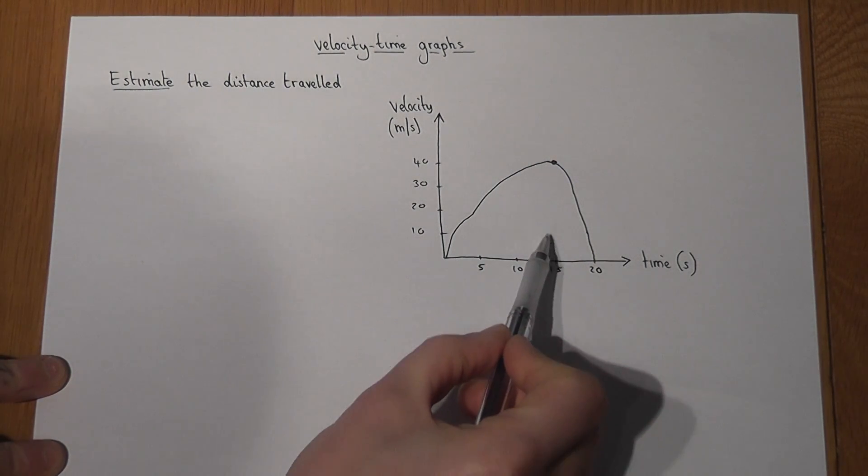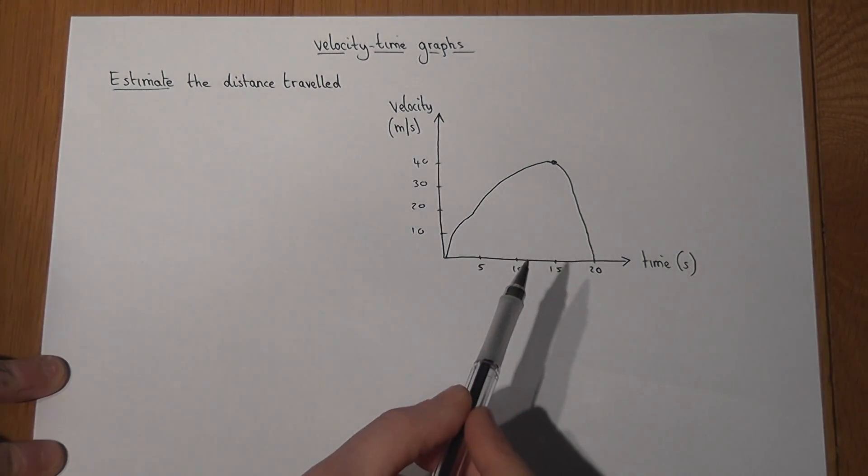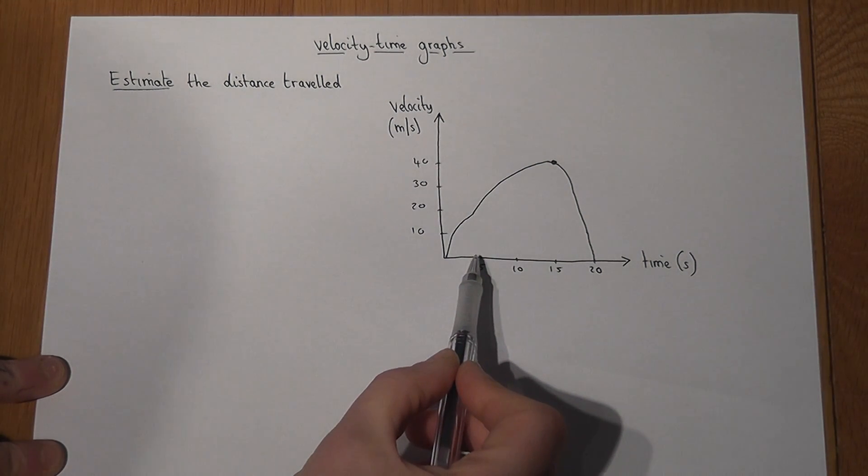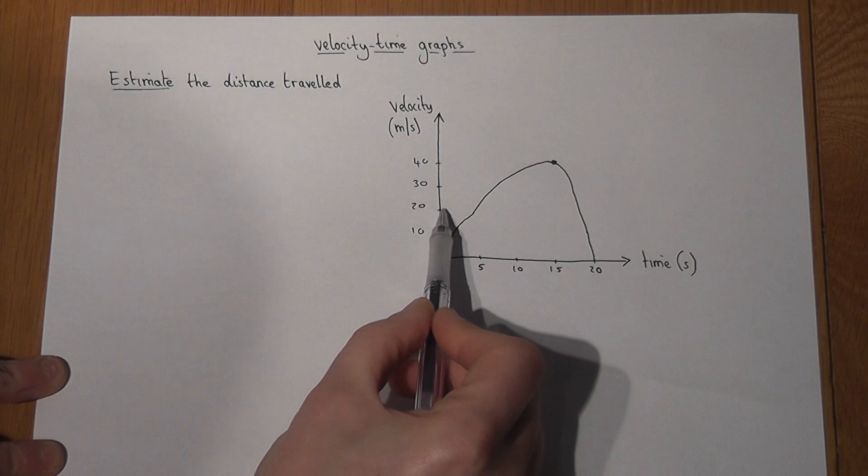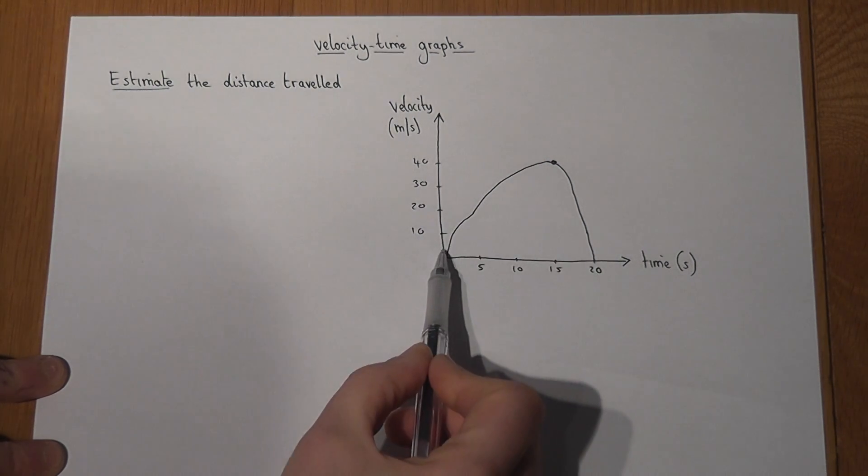After 15 seconds this person's going at 40 metres per second. After 5 seconds he's going around 20. At 0 and 20 seconds he's got no speed at all.